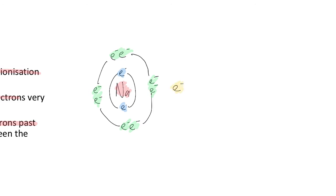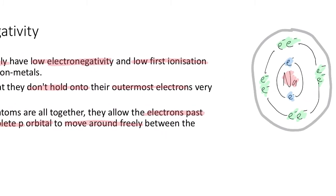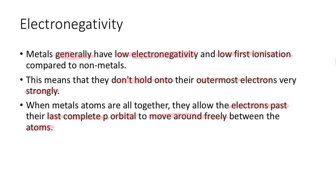Which means that this poor guy, this electron here, is effectively the one that is not stable. Because all of this inside here is stable because it's got effectively a full p orbital. So what they do is that then they allow the electrons past their last complete p orbital to move around freely between atoms.